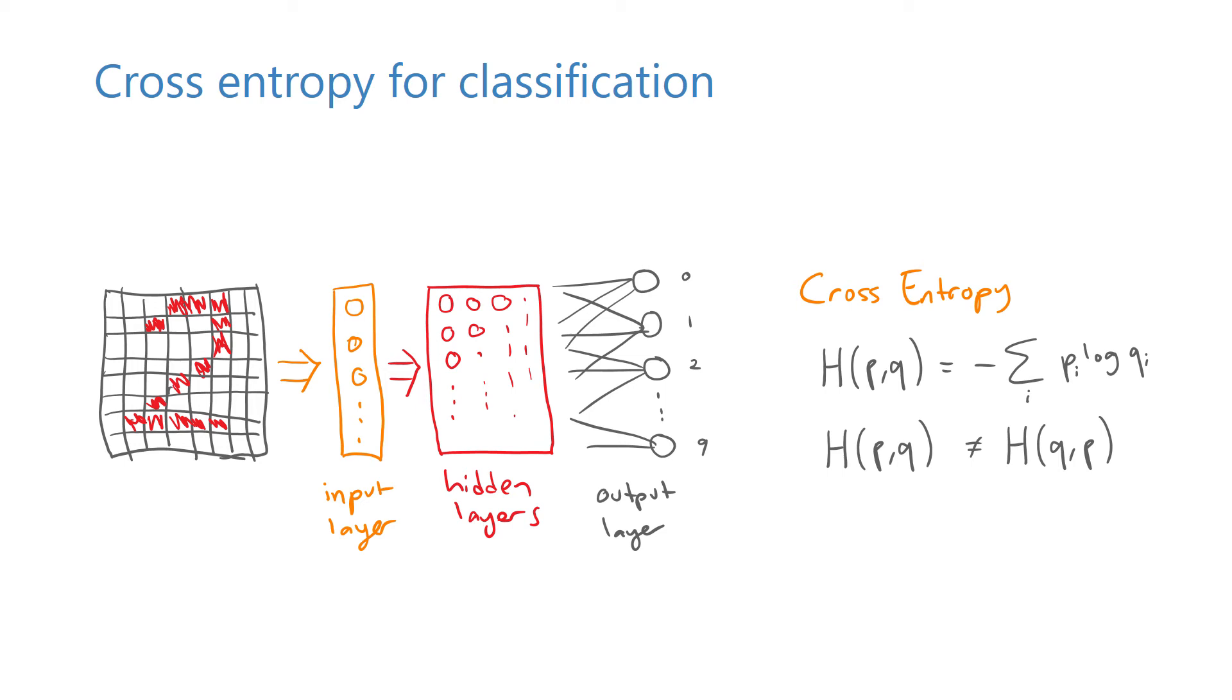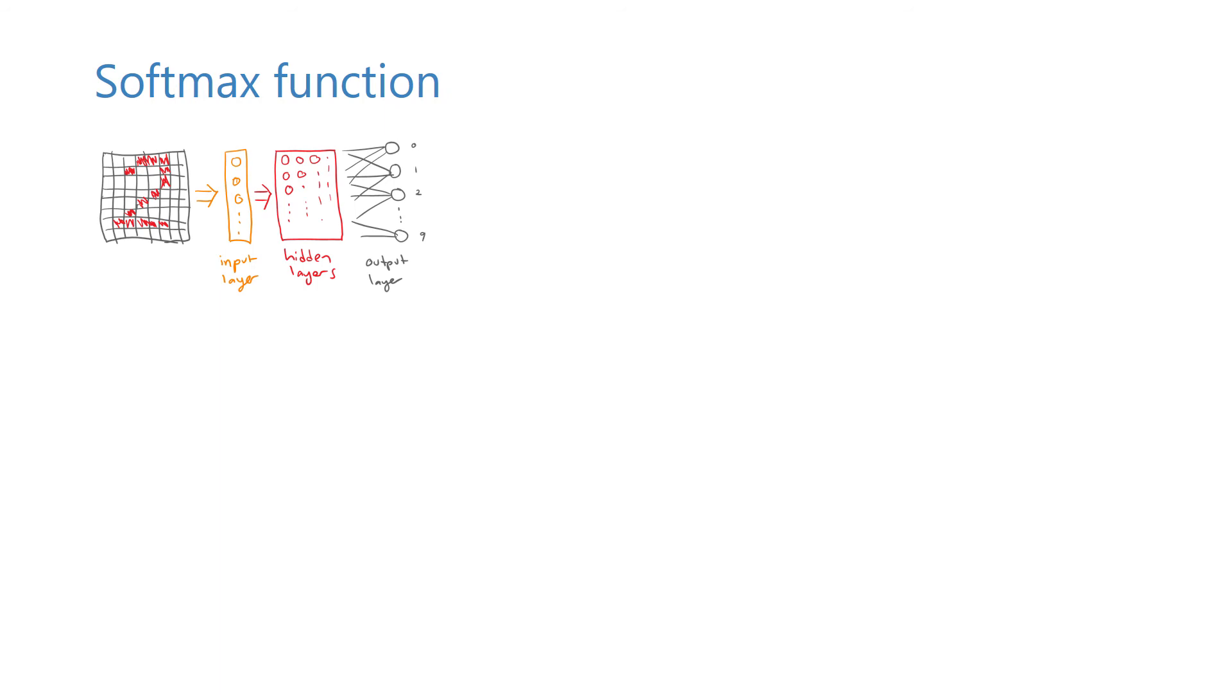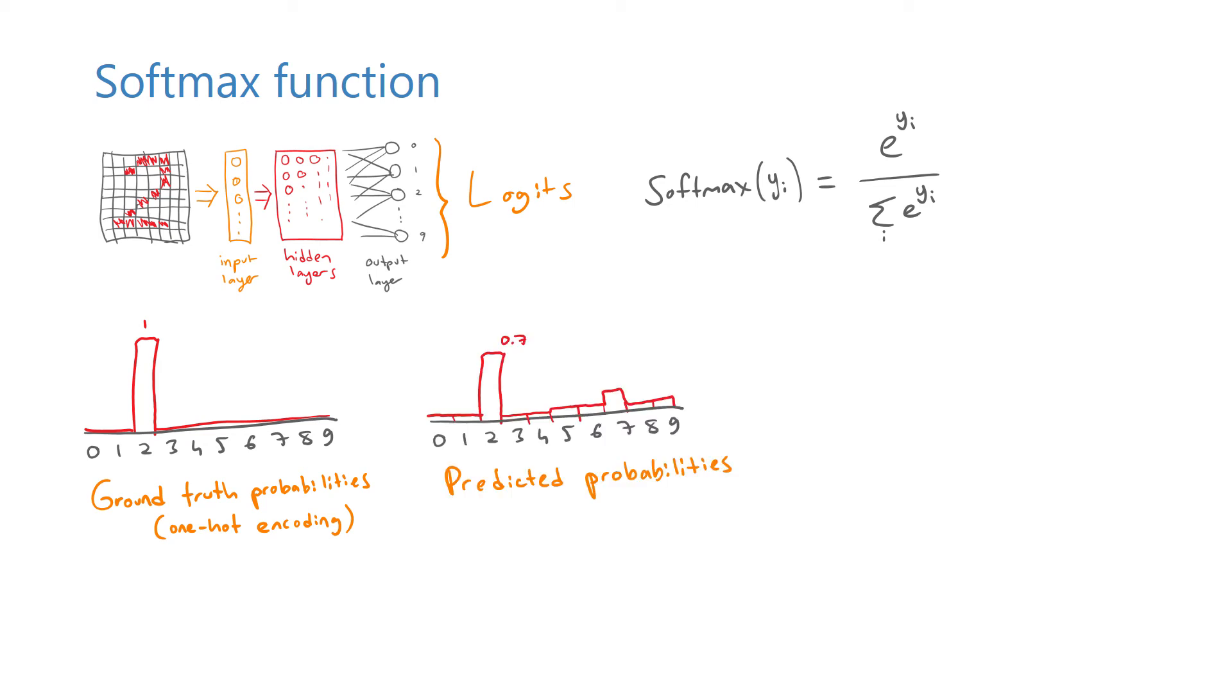So, how do we get these probability distributions? For the ground truth labels, it's quite simple. We assign probability 1 to the true class label and 0 to all others. This representation is also called 1-hot encoding. These labels don't have to be binary. In some cases, we might have a softer probability distribution for each sample too. To get the predicted class probabilities, we pass the output variables, which are called logits, through a softmax function, which squashes the outputs to the range 0 and 1 and sum up to 1. Once we have the actual and the predicted probability distributions, we can easily compute the cross-entropy function and train the model to minimize it.